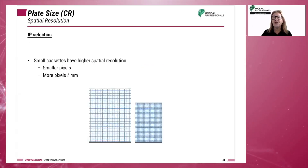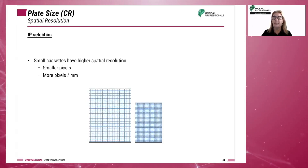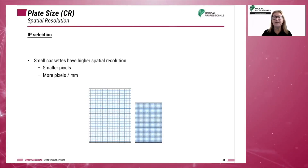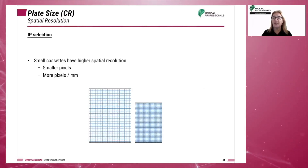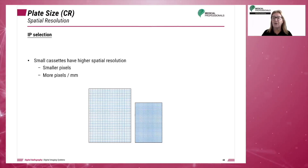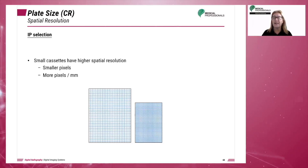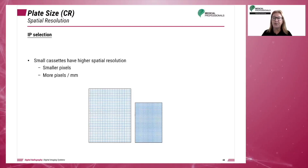Spatial resolution depends on the imaging plate size as well. CR readers scan at a relatively constant frequency of approximately 2,000 by 2,000 pixels. Using the smallest IP possible results in the highest sampling frequency and thus in higher spatial resolution.